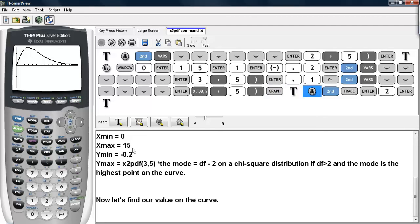And now let's find our value on the curve that we hit earlier. So we can go 2nd TRACE to find the value on this curve, and we type in the value of 2.